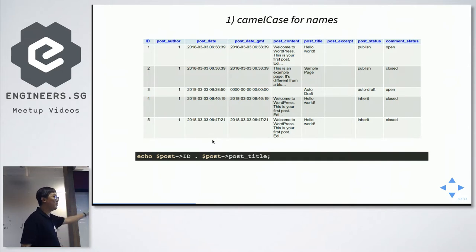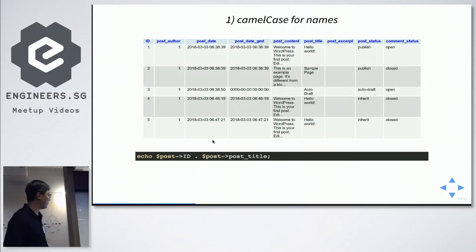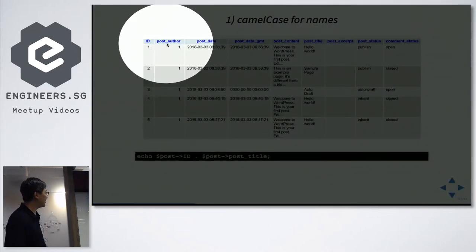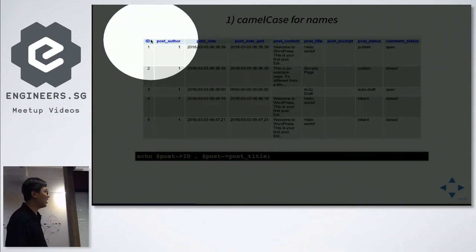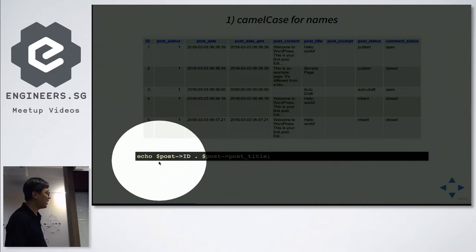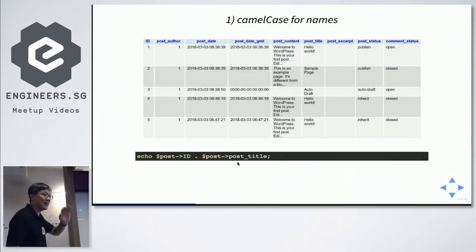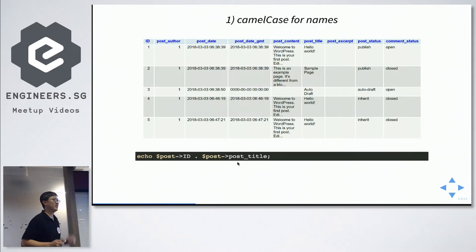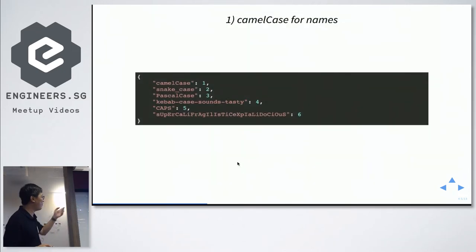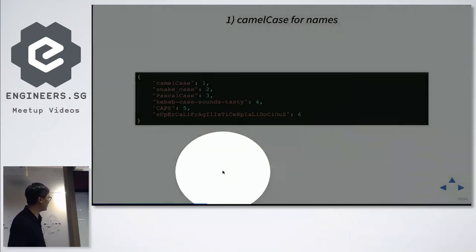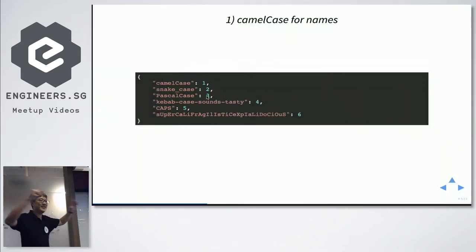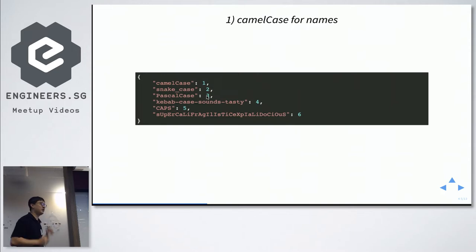WordPress uses underscores in their database schema and maps directly to them in code, which is fine and consistent for them. The most important thing is to be consistent. Don't have one property in camelCase, another in snake_case, another in PascalCase, and another in kebab-case — kebab-case looks like items on a skewer, hence the name. You don't need to agree with me on camelCase, but the most important thing is to be consistent.